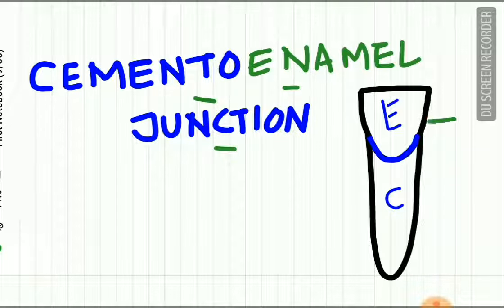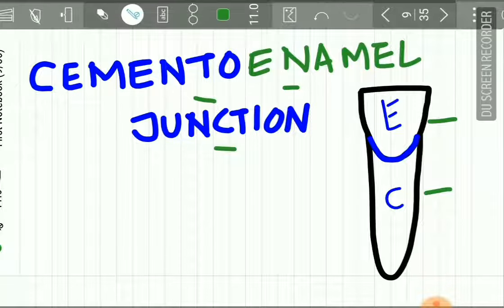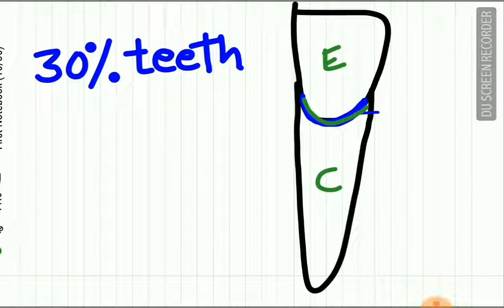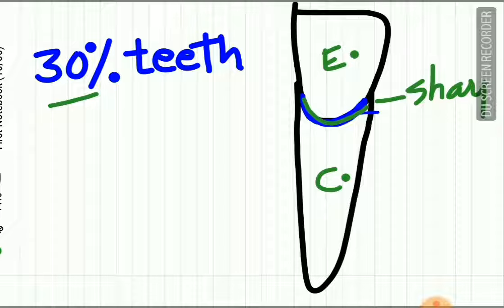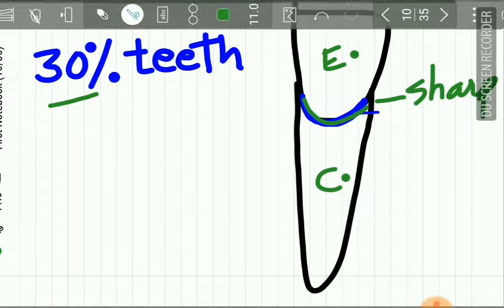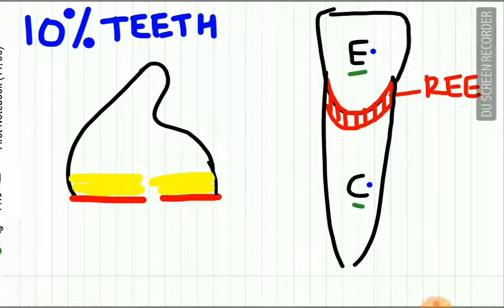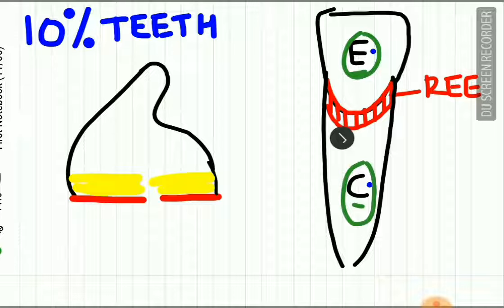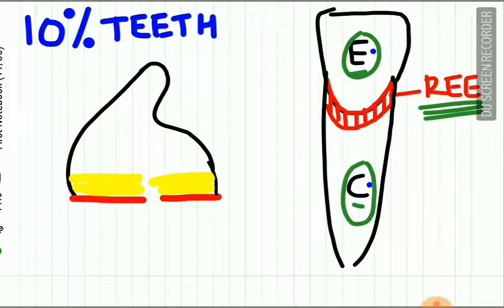The junction between the enamel of the tooth and the cementum of the root is called the cemento-enamel junction. This junction is variable. In 30% of teeth the enamel and cementum meet each other in a sharp line. In 10% of teeth the enamel and cementum do not meet each other, and at that junction the reduced enamel epithelium is present between the two tissues.